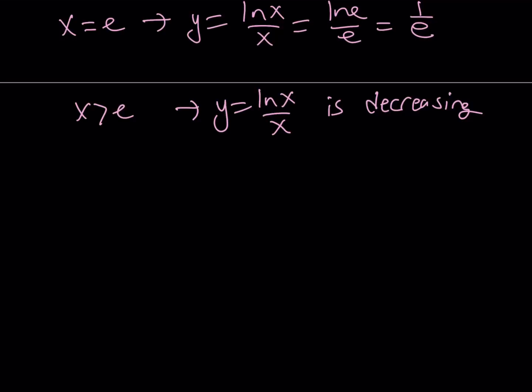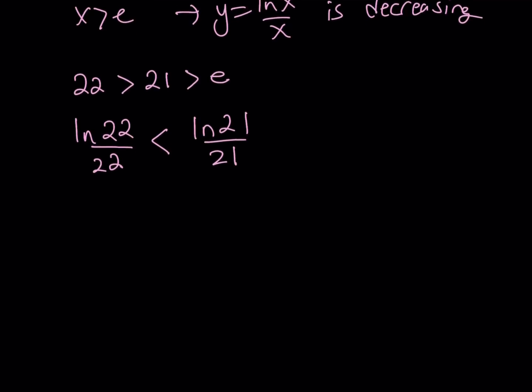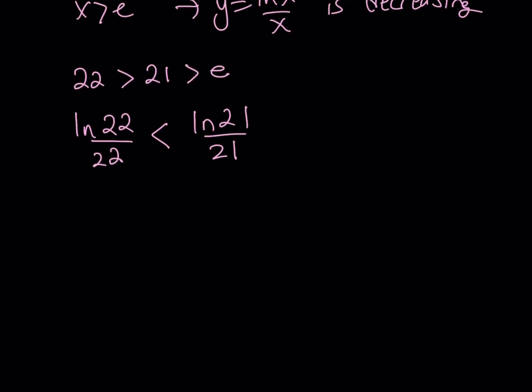So, here's what it means from a solution perspective for our problem. 22 is obviously greater than 21, and they're both greater than e. So, since our function is decreasing, then its value at 22 is going to be less than the value at 21. In other words, ln 22 over 22 is going to be less than ln 21 over 21. Great. Now, let's go ahead and make the cross multiplication.